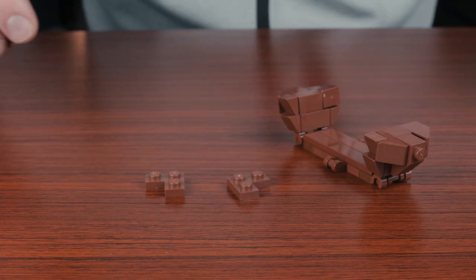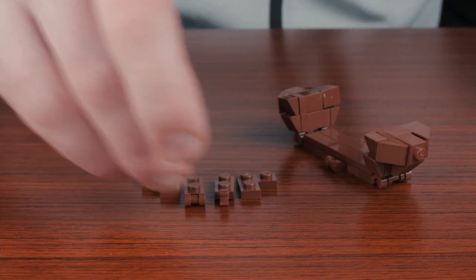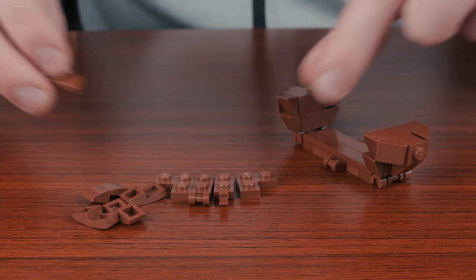Moving on to the sides of the ship, these are made up of some simple plates, tiles, modified plates, and 1x2 curbslopes.